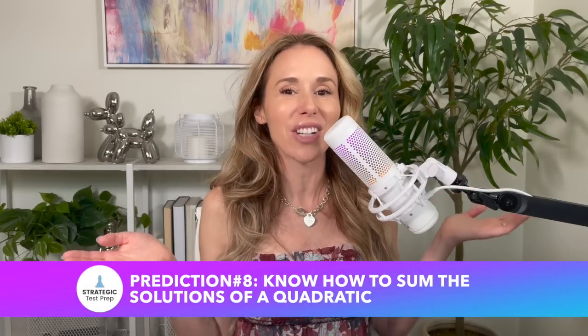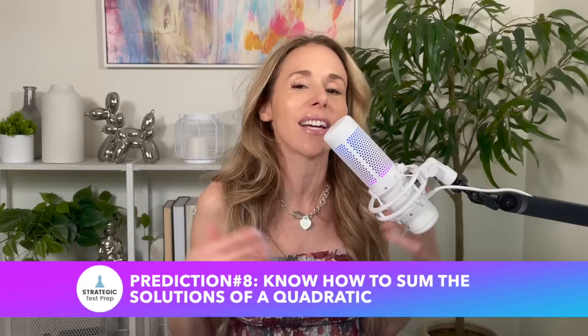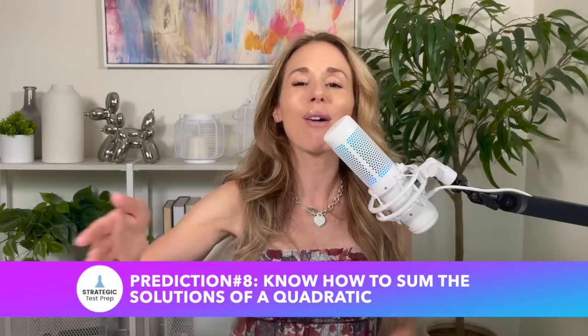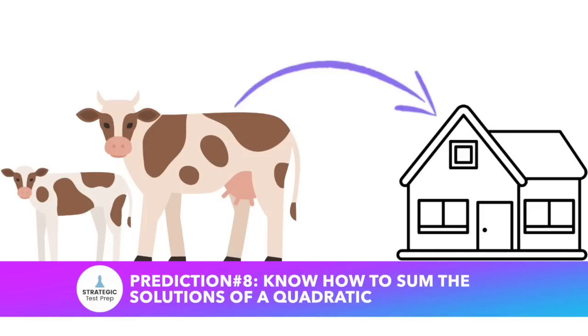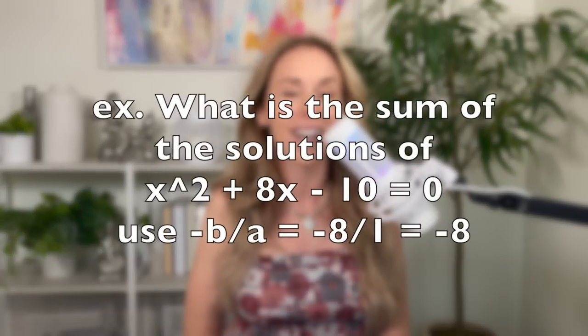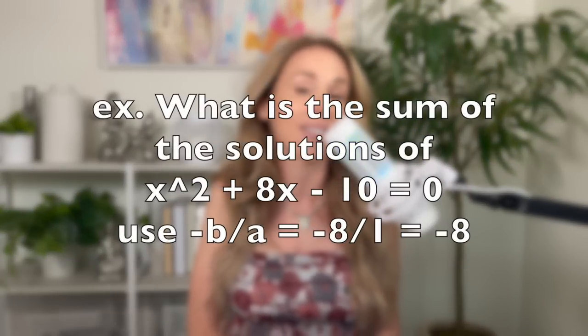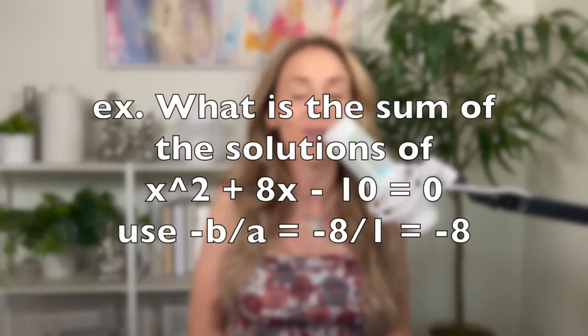The next concept is the sum of solutions of a quadratic — I am in love with this trick. If they give you a quadratic and ask for the sum of the solutions, it's negative b over a. That's all you have to do.